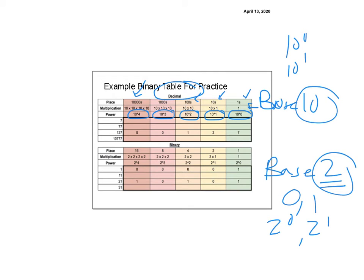When we're dealing with the binary system, it's 2 to the 0, 2 to the 1st, 2 to the 2nd, 2 to the 3rd, 2 to the 4th. So 2 to the 0 is 1, just like before. But 2 to the 1st is 2 times 1, which is 2. And 2 to the 2nd is 2 times 2, which is 4. And 2 to the 3rd is 2 times 2 times 2, which is 8. And 2 to the 4th is 2 times 2 times 2, which is 16.